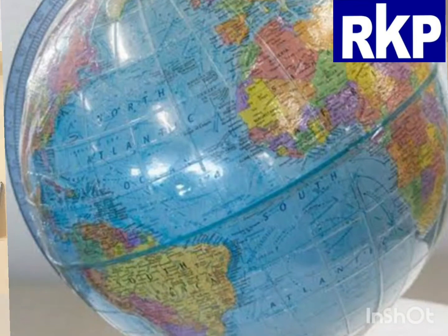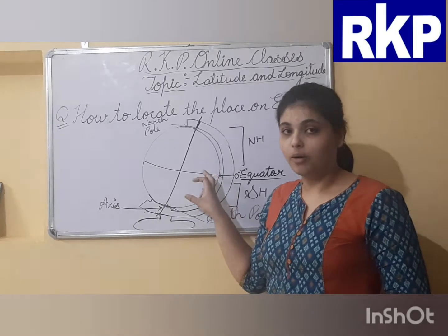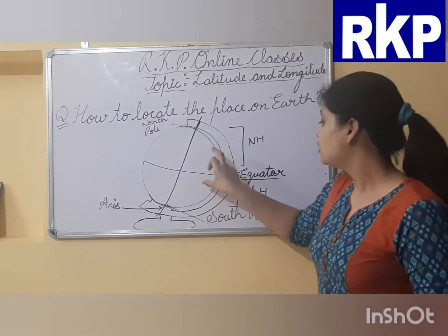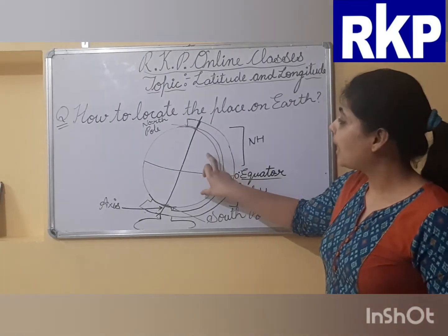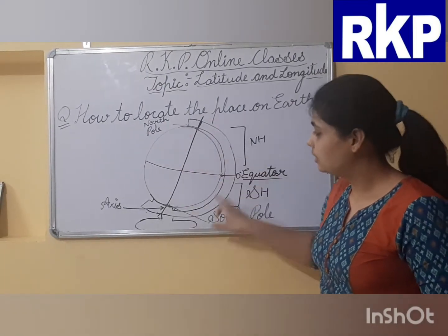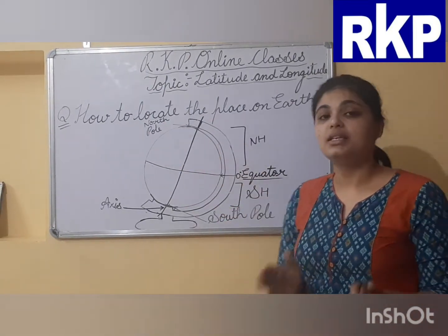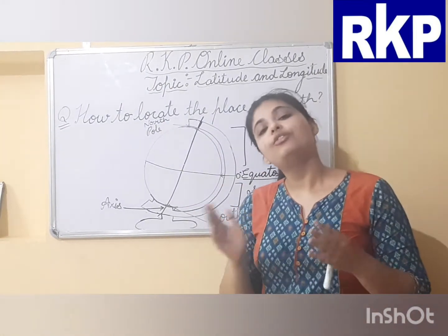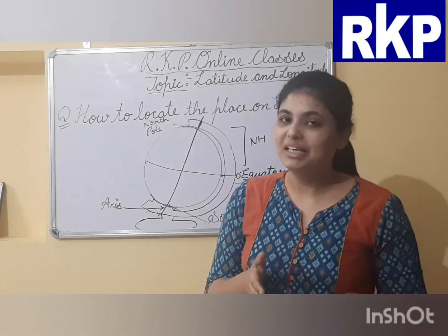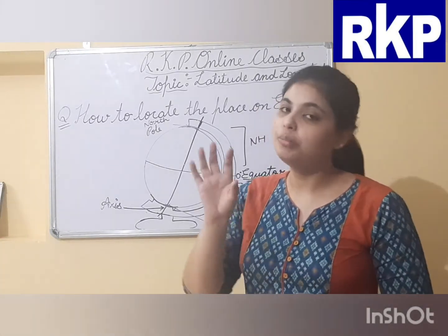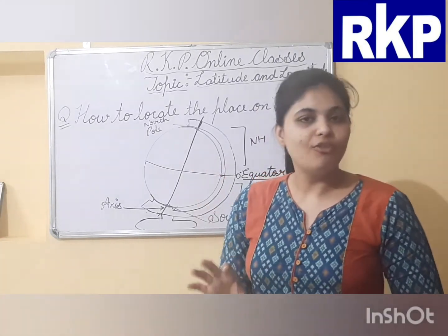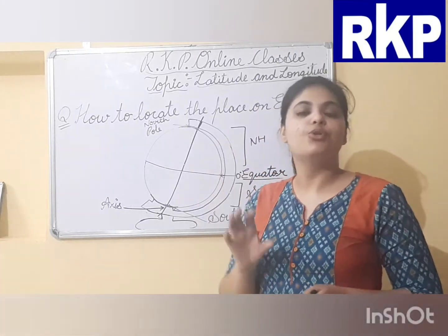Here you can see — this is a globe. This globe is a model of the earth. We also call it a replica of the earth, or a miniature form of the earth — a small copy of the earth.